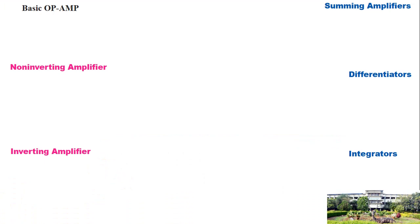In this video I will summarize our discussion about operational amplifiers. The symbol of a basic op-amp has terminal 2 as the inverting terminal, a non-inverting terminal, an output terminal, and a plus and minus voltage supply.